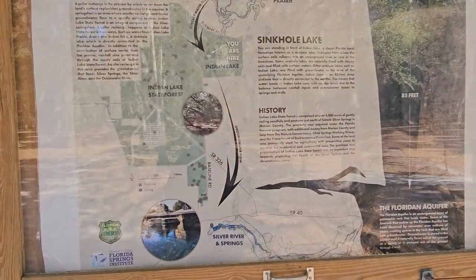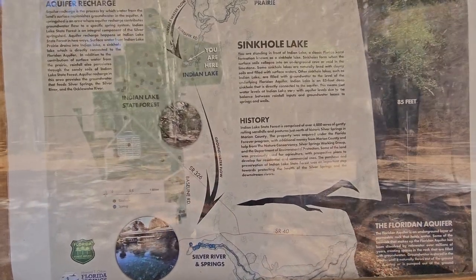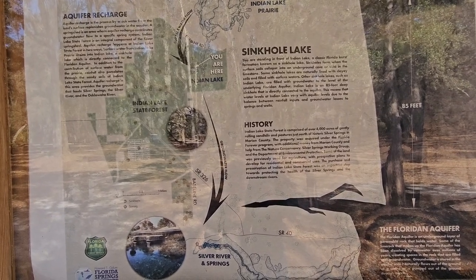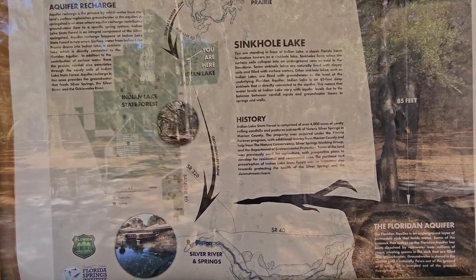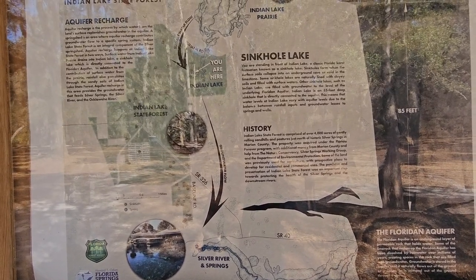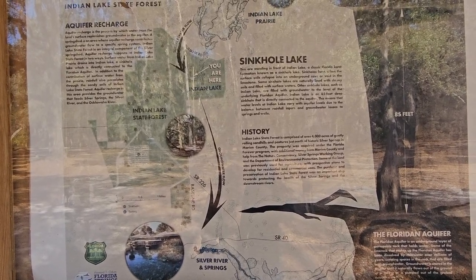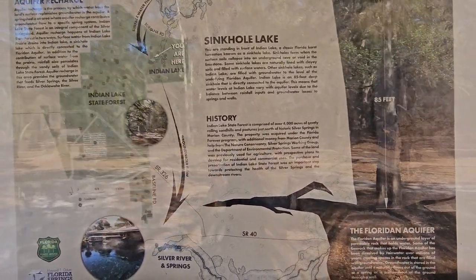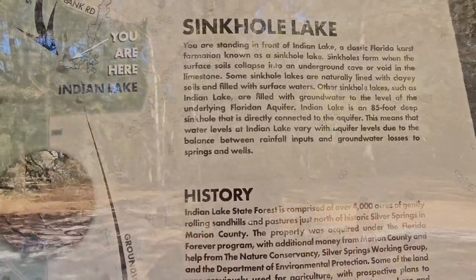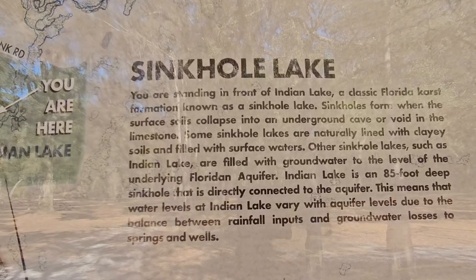So you are standing in front of Indian Lake, a classic Florida karst - K-A-R-S-T - formation known as a sinkhole lake. Sinkholes form when the surface soils collapse into an underground cave or void in the limestone. Some sinkhole lakes are naturally lined. I'll let you read the rest - I don't want to spend the whole video here. You can pause right there and read that.